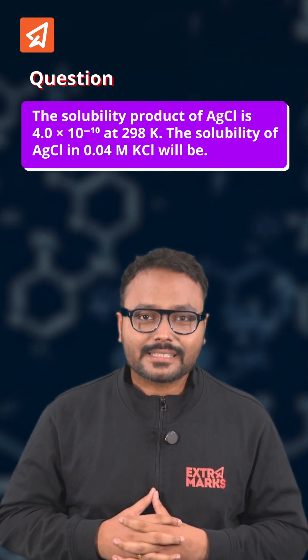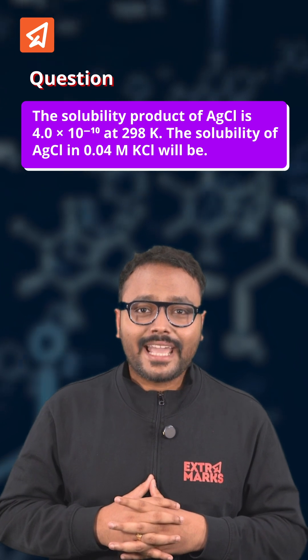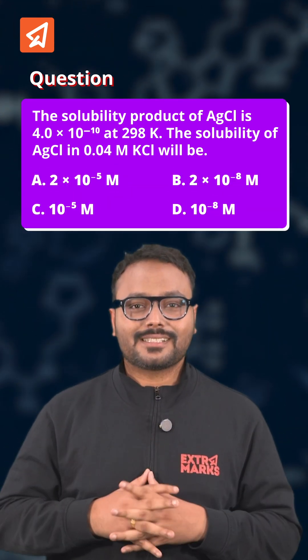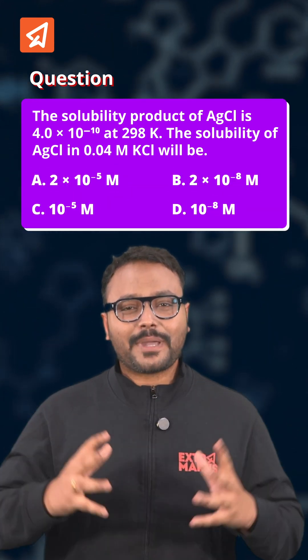Here's the question: the solubility product of silver chloride is 4 × 10⁻¹⁰ at 290 K. The solubility of silver chloride in 0.04 molar KCl will be — these are the options.